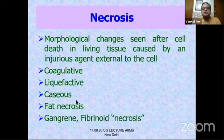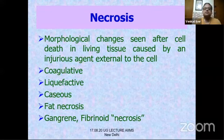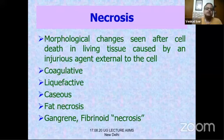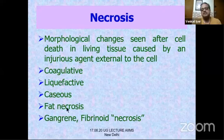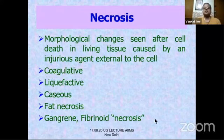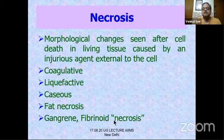Caseous necrosis is a combination of coagulative and liquefactive necrosis seen in tuberculosis. There is also a third component — mycolic acids derived from the cell wall of tuberculosis bacteria — producing a peculiar cheese-like necrosis. Other types of necrosis include enzymic fat necrosis, gangrene, and fibrinoid necrosis. Fibrinoid necrosis is not a true necrosis — it is deposition of immunoglobulins and immune complexes that looks like vessel necrosis, called fibrinoid because of the fibrin-like material.